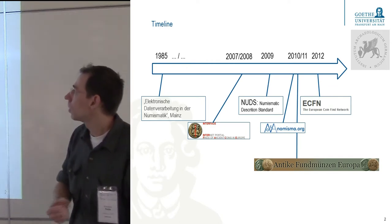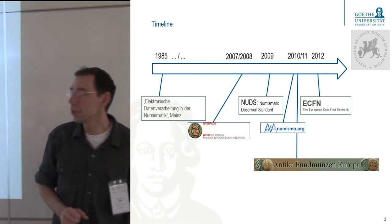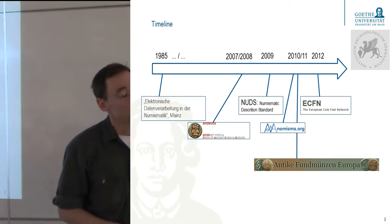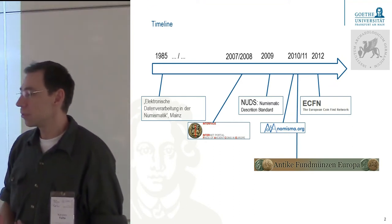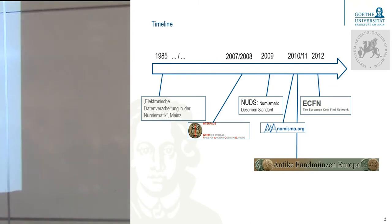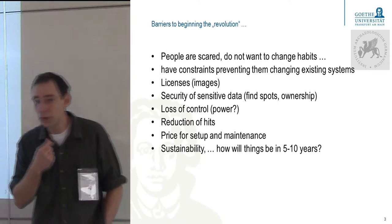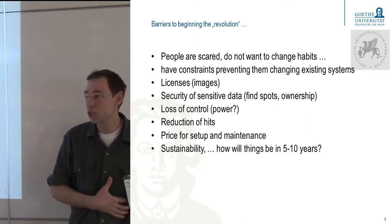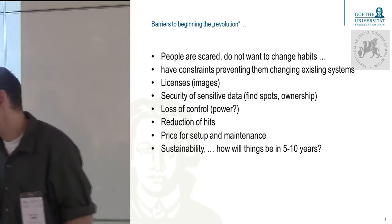And there's the European Coin Find Network, ECFN, where we also have a group of numismatists that work together. They're interested in the subject and they want to collaborate. So that's the timeline and background. And in our experience, what we discovered, what are the main challenges in really getting people to move forward to join the revolution.